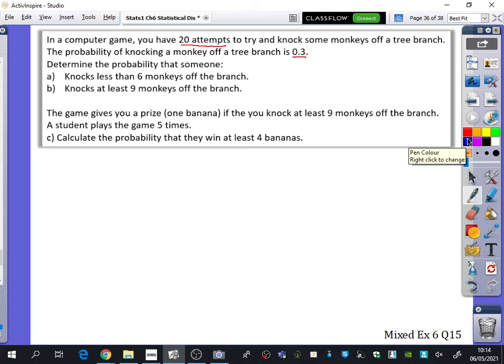So I think that if X is the number of monkeys that is knocked off the branch, it would be binomially distributed with what should go inside here? 20 and 0.3. So X ~ B(20, 0.3).